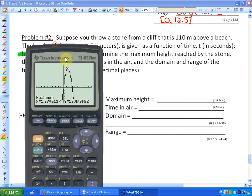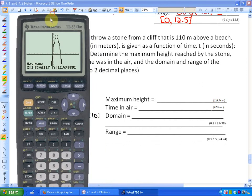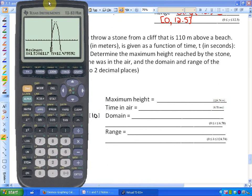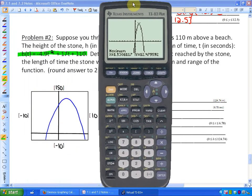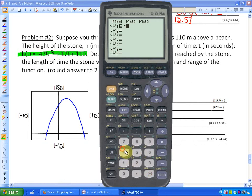Now since our calculators don't deal with the variables h and t very well, what we're going to do is just use the variables y and x. So if I just press y equals and clear the function, I'm going to enter in the function in green negative 4.9 and instead of t, I'm just going to represent it with x squared plus 17x plus 110 and hit graph.